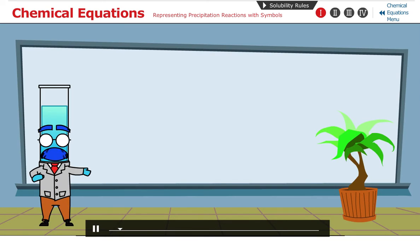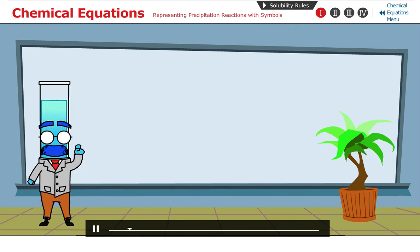In this section, we'll learn how to write three kinds of chemical equations for precipitation reactions.